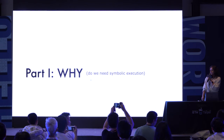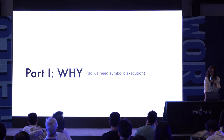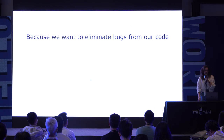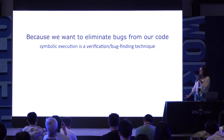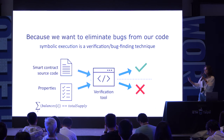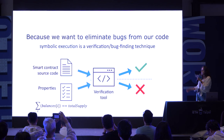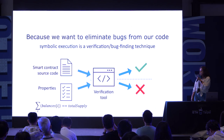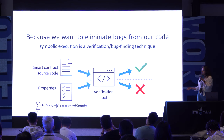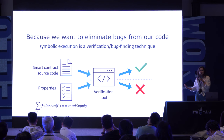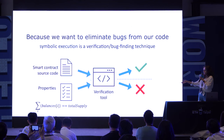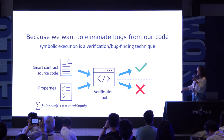Why should we care about symbolic execution? The short answer is because we want to eliminate bugs from our code, and symbolic execution can help us with that — it's a very popular verification or bug-finding technique. The problem of smart contract verification looks something like this: we usually have some smart contract source code, we want to make sure it's implemented securely and correctly, and we can define a set of properties for it. Properties are essentially a specification — a set of statements that describe how the smart contract should work, what it should do, what it should not do. A popular type of property is the balance invariant, which states that the sum of user balances should be equal to the total supply of the token.